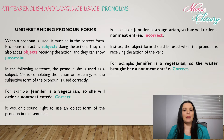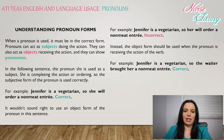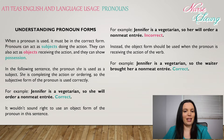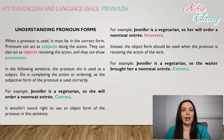When a pronoun is used, it must be used in its correct form. Pronouns can act as subjects doing the action, they can act as objects receiving the action, and they can show possession. In the following sentence, the pronoun 'she' is used as the subject. She is completing the action of ordering, so the subjective form of the pronoun is used correctly. For example: Jennifer is a vegetarian, so she will order a non-meat entree. This is correct.